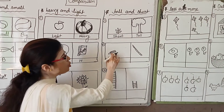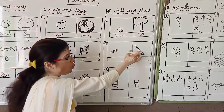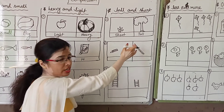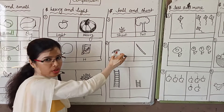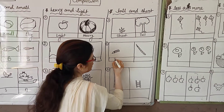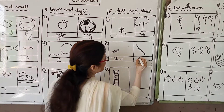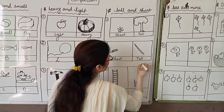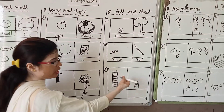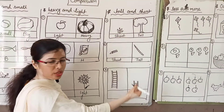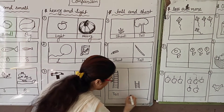Here two pencils are there — one pencil and a second pencil. One is taller and the second one is shorter. You can write here short and you can write here tall. Next, two letters are there — one tall letter and the second one is a short letter: tall and short.